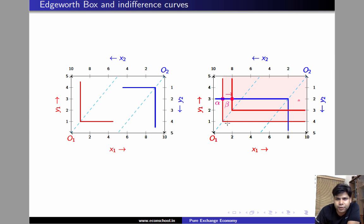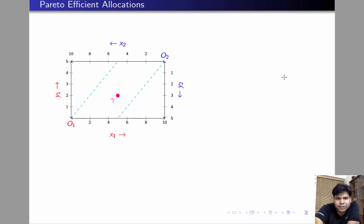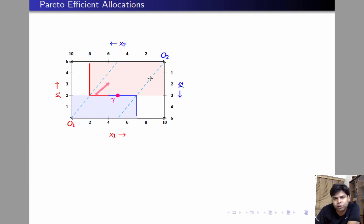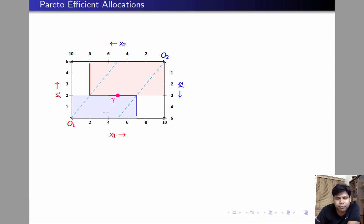Now we will check a point lying within the two 45-degree lines. Let us consider a point such as gamma. This is the indifference curve of individual 1 through this point — this is the region where we can make 1 strictly better off. This is the indifference curve of individual 2 through this point, and this is the region where we can make individual 2 strictly better off. If we want to make 1 better off, we must move into that region, but doing so makes 2 worse off. Similarly, making 2 better off necessarily makes 1 worse off. So there is no way to make one better off without making the other worse off — gamma is efficient.